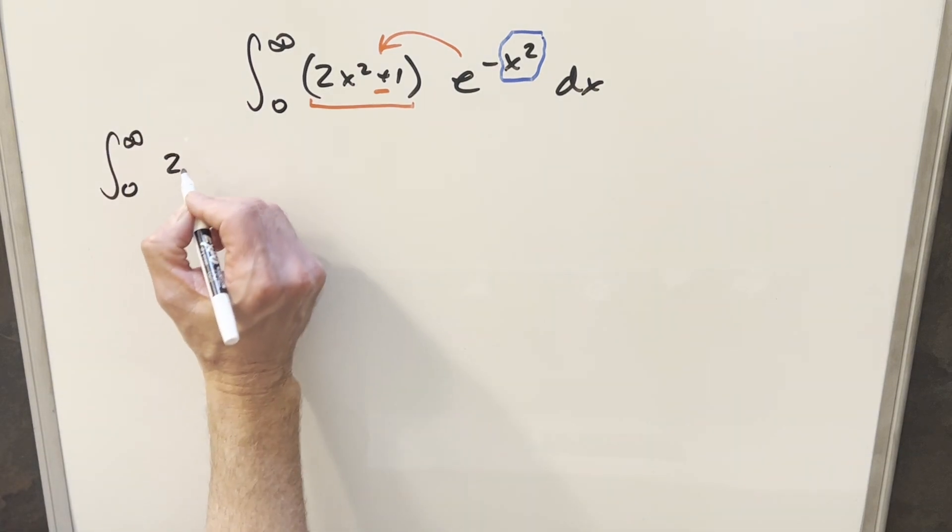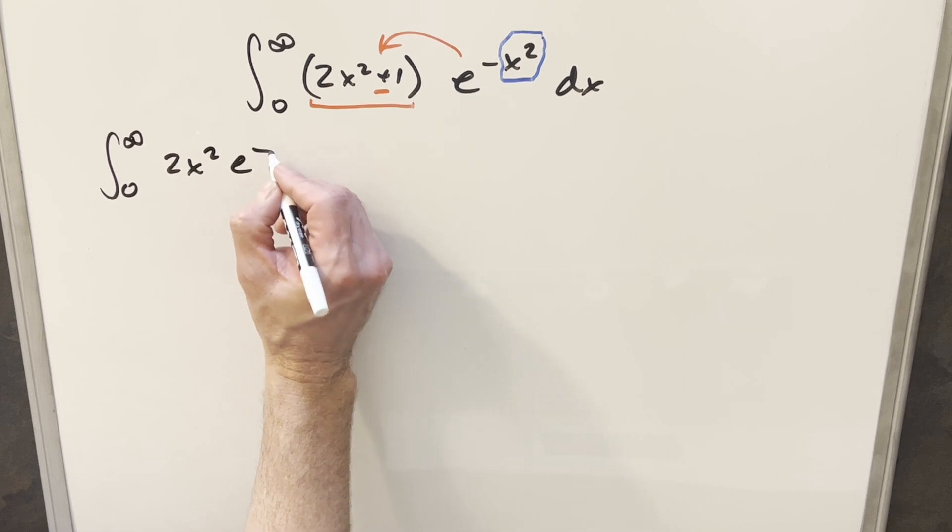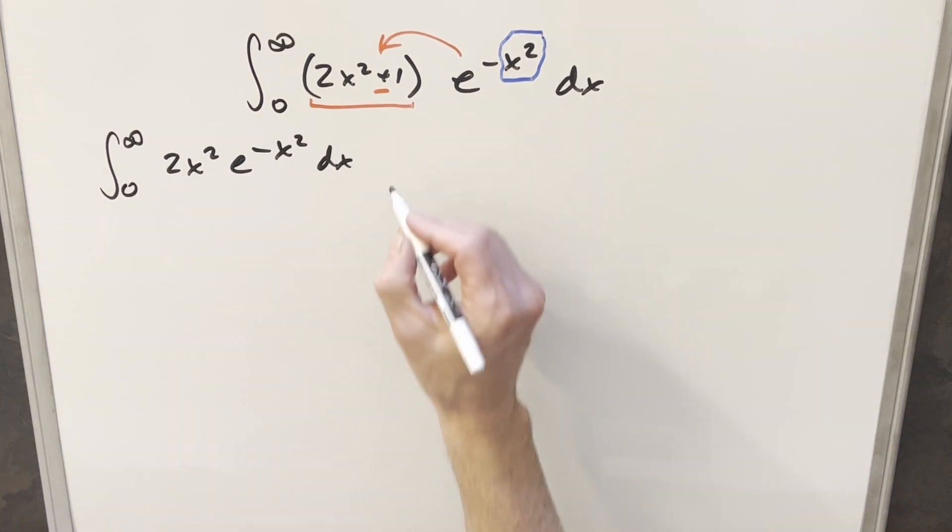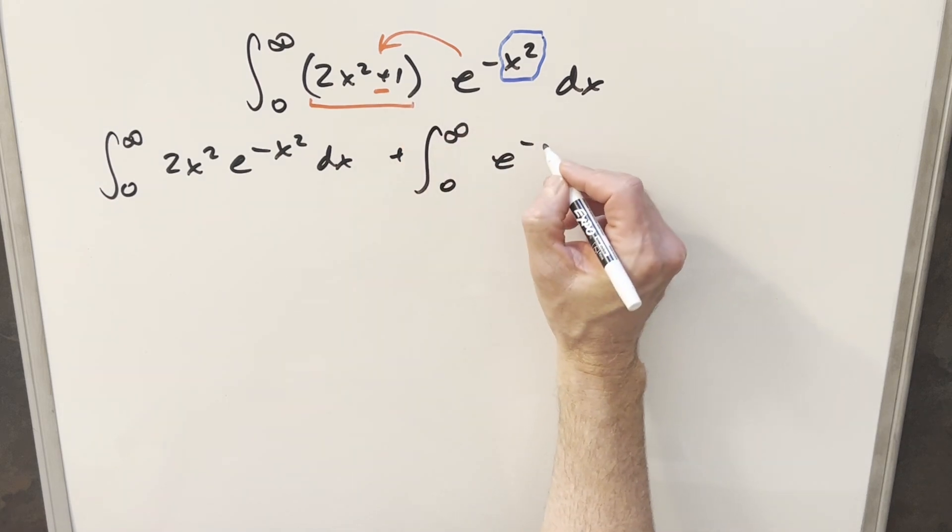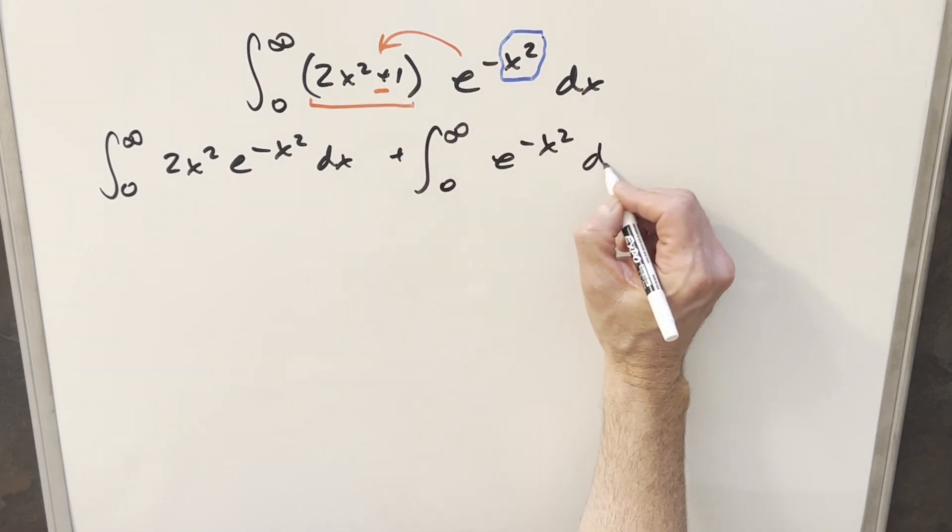So for the first one, we're going to have just 2x squared e minus x squared. And for the second one, we're just going to have 1 times e to the minus x squared, or just e to the minus x squared dx.